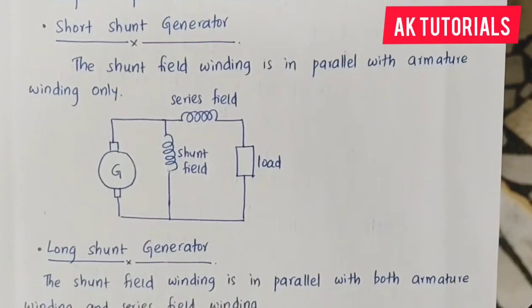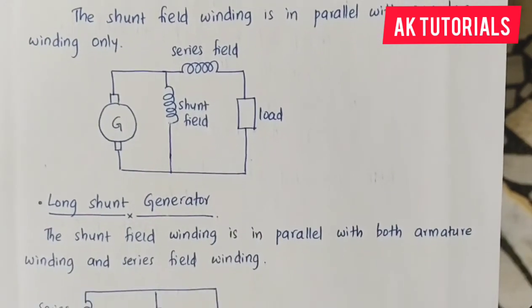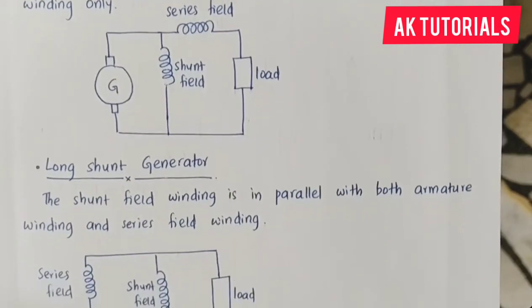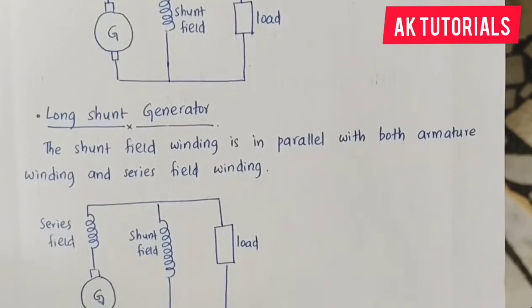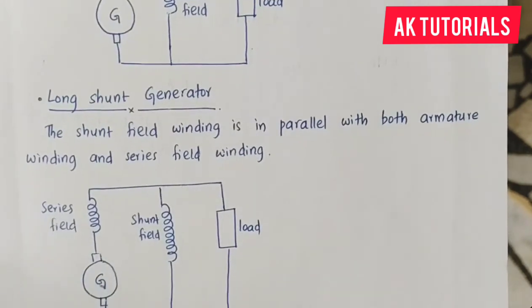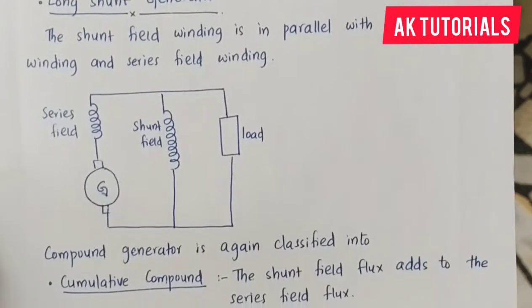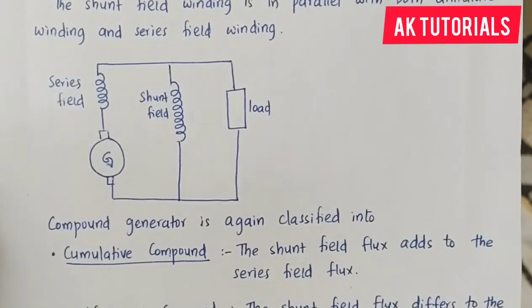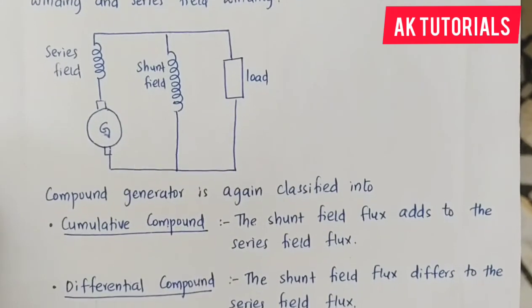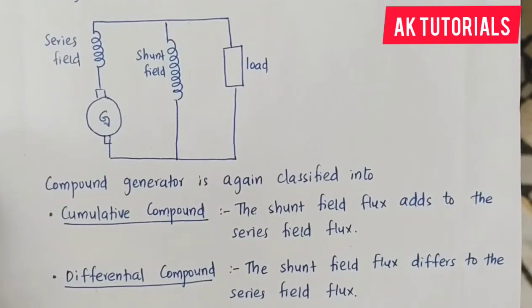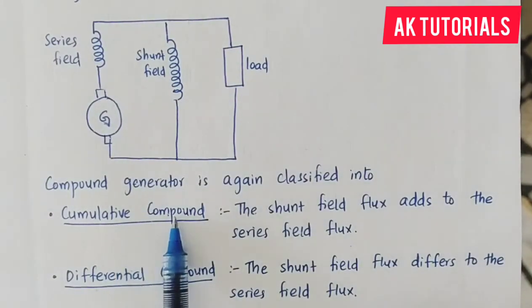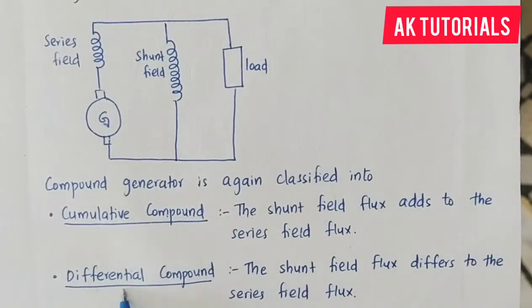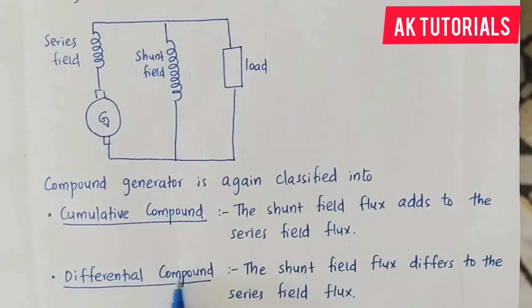The compound generator is classified as long shunt generator and short shunt generator. The winding is further classified as cumulative compound and differential compound.